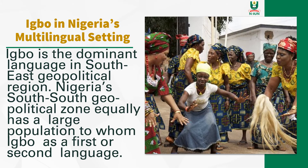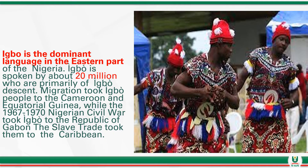Let us examine the Igbo language in Nigeria's multilingual setting. Igbo is a dominant language in the southeast geopolitical region, dominant in the eastern part of the nation. It has about 20 million speakers who are primarily of Igbo descent.